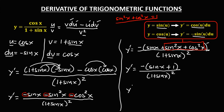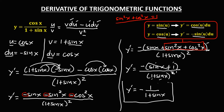Simplifying: since 1 plus sine x in the numerator cancels with one factor of 1 plus sine x in the denominator, the final answer is y prime equals negative 1 over 1 plus sine x. This is the derivative.